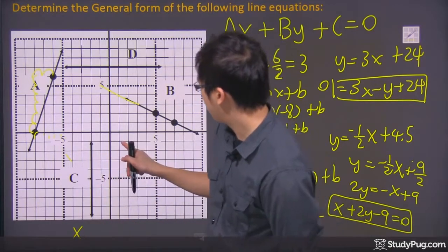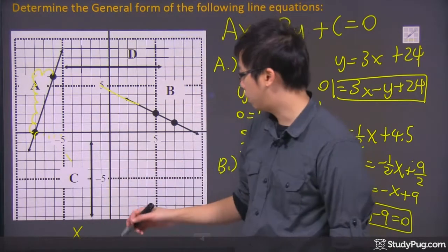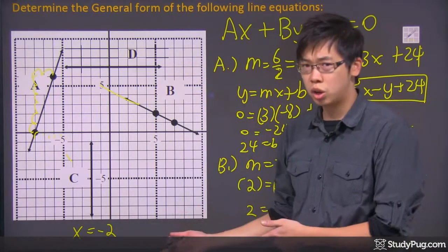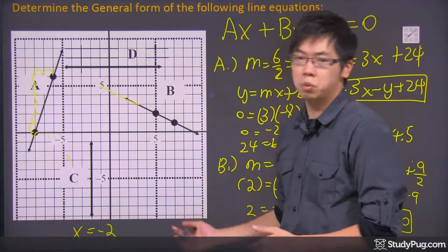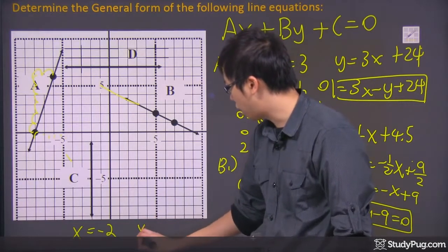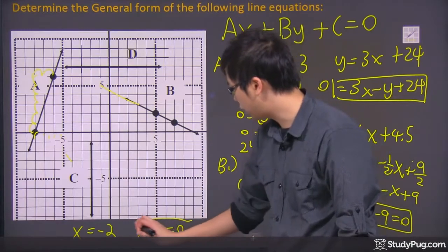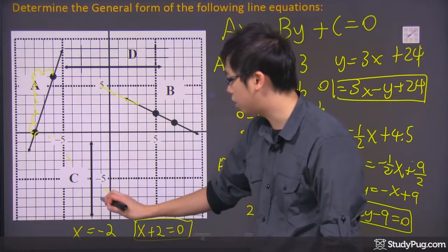It's just X, and it's on negative 2. So it's just X equals to negative 2. So if you want to change that into the standard equation, just move everything to one side. It's just going to be X plus 2 equals to 0. And that is the general equation for C.